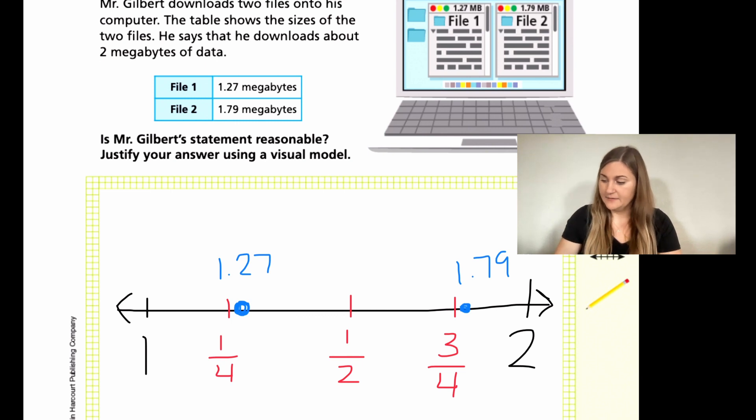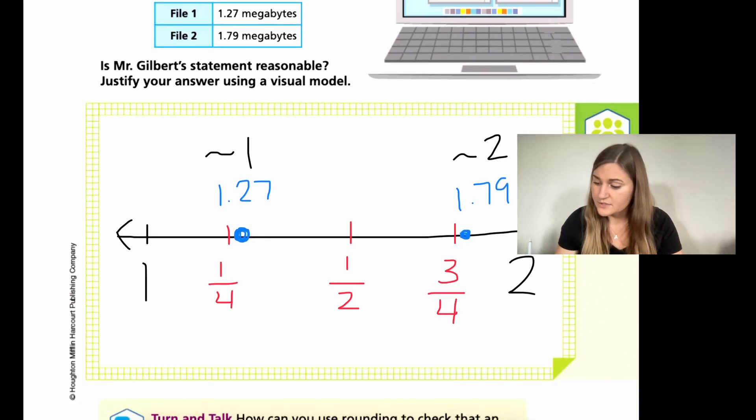Now, if I was looking at it and I was having to round my numbers, my 1.27 is closer to the 1, right? If I was just looking at the whole numbers, I could do this with fractions if I wanted to, but I'm just going to do the whole numbers. So the 1.27 is way closer to the 1. And then the 1.79 is way closer to the 2. And that little squiggly line just means about. So if I have about 1 and then about 2, if I added them together, would I have about 2? No, of course. If I have about 1 and about 2 and I add them together, I'm going to have about 3. So he's off by an entire megabyte. So we would just go ahead and say no.